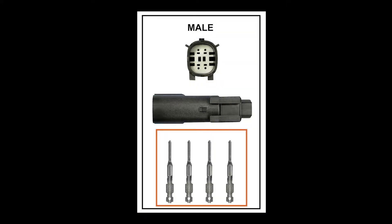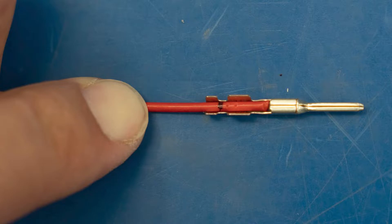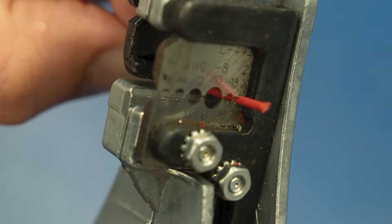To start let's grab the four pins out of the male connector side. Place the first wire in the male pin and mark appropriately. Use your wire stripper to strip it at that length.